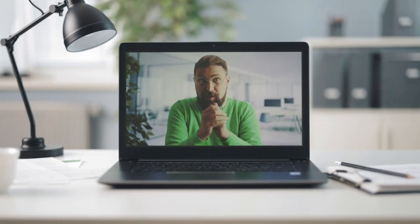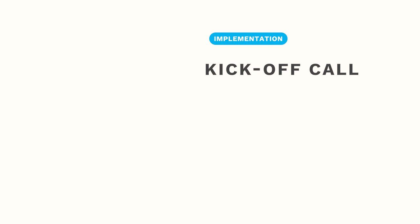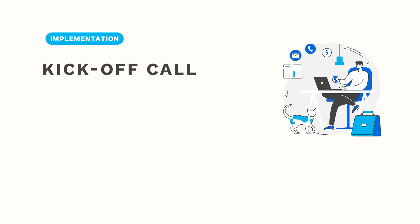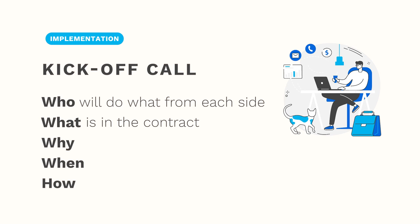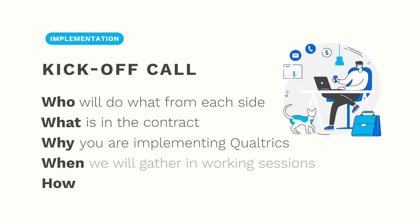Your implementer's first task is to schedule a kickoff call with you and your team. In the kickoff call, you will discuss who, what, why, when, and how — who will do what from each side, what the contract includes, why your business is implementing Qualtrics, when we will gather in working sessions, and how we will communicate in between those sessions.